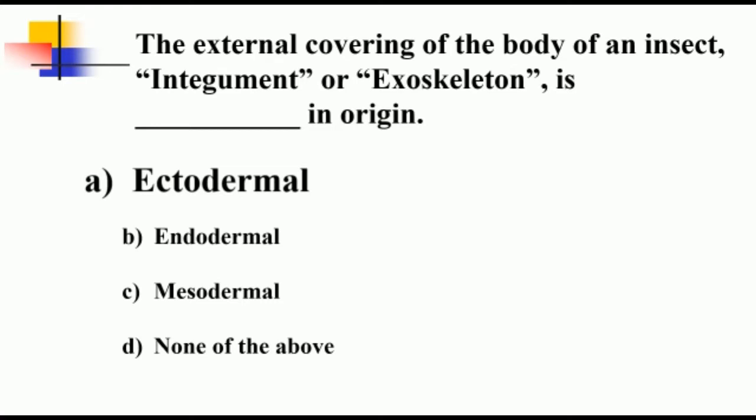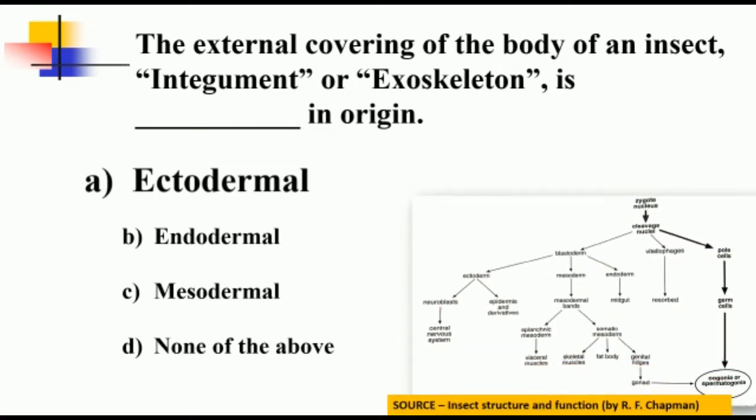What happens during the embryonic development of an insect, when the insect is still in its egg stage, there occurs a process called organogenesis in which from these layers—ectoderm, endoderm, and mesoderm, which are referred to as germ layers—different organs get differentiated. From ectoderm, central nervous system, epidermis and its derivatives will be formed. Mesoderm will give rise to visceral muscles, skeletal muscles, fat body, and genital ridges. Similarly, endoderm will give rise to midgut, and thus they are said to be originated from the respective germ layers.